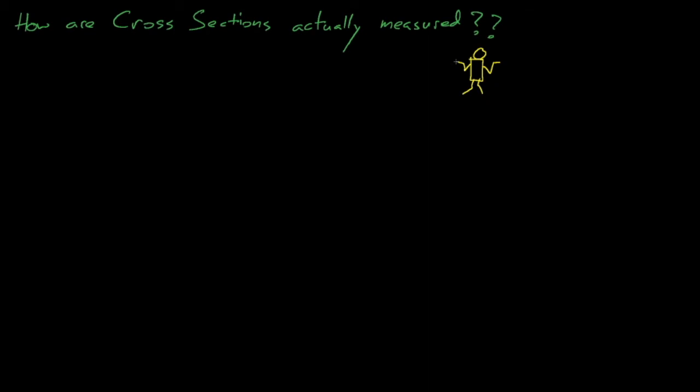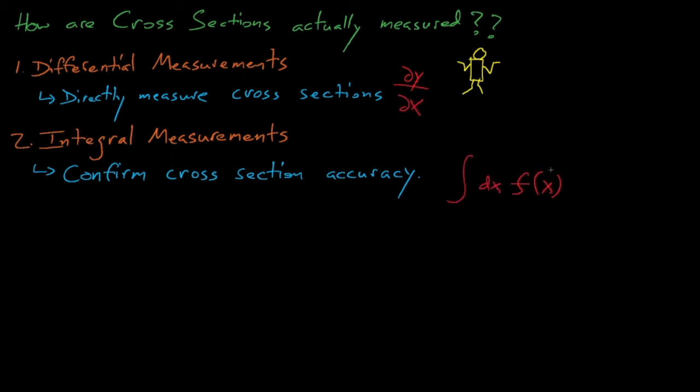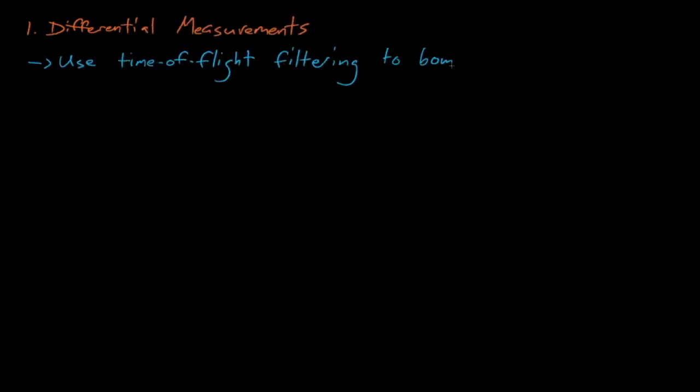Thus, it's worthwhile to discuss how we measure cross-sections. There are two classes of measurements that we use for cross-sections, differential measurements and integral measurements. In short, differential measurements will actually measure cross-sections, while integral measurements confirm the accuracy of differential cross-section measurements and evaluations.